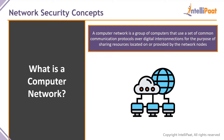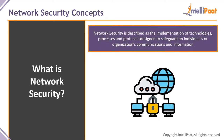If the server has access to the internet, all computers on the network will have access to the internet if configured properly. Network security is defined as the implementation of technologies, processes, and protocols designed to safeguard an individual's or organization's communication and information. If you have a computer network, there is a possibility of data being leaked or interrupted, and you need to prevent that by implementing these protocols and technologies — this is the field of network security.